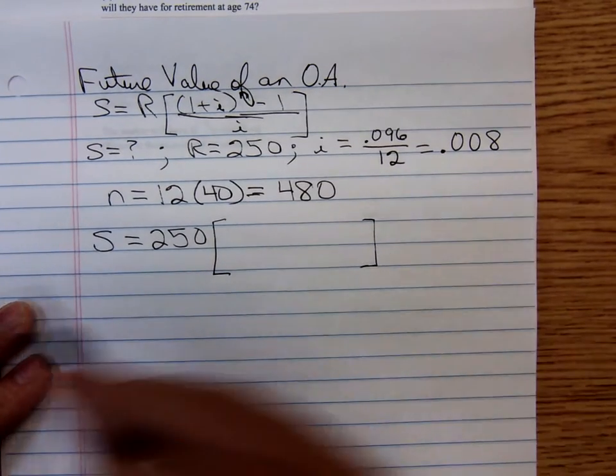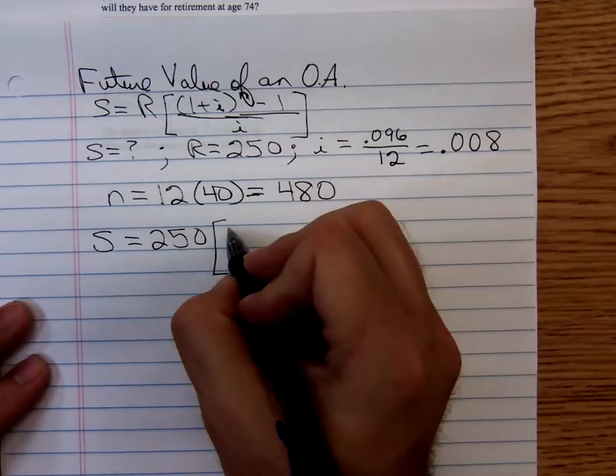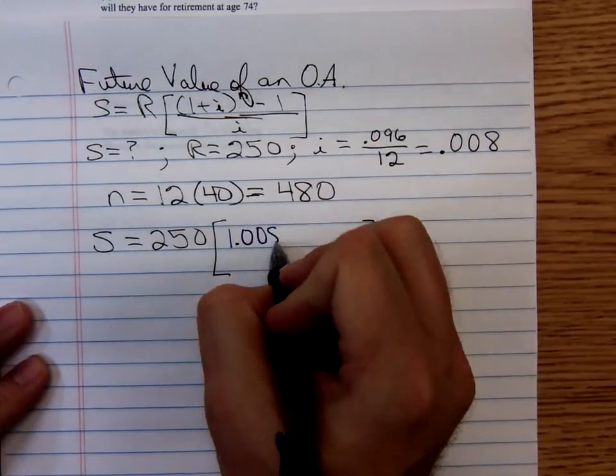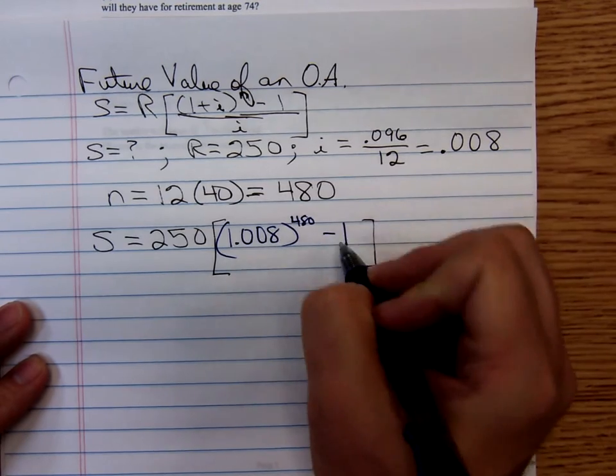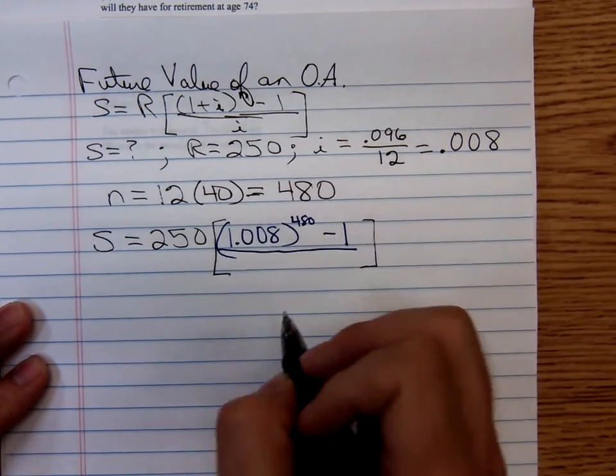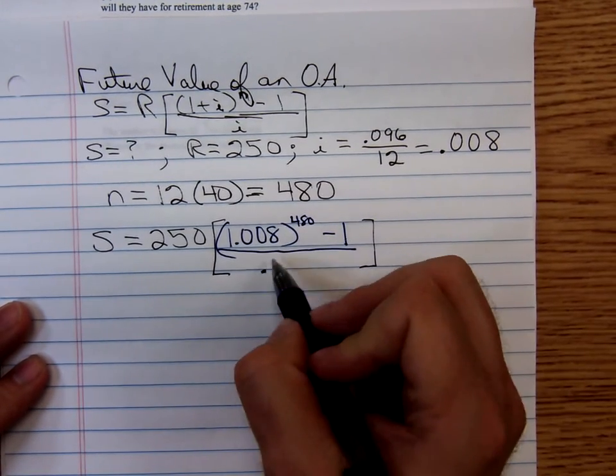1 + i, I can do that in my head. That's 1.008 to the 480 minus 1, all divided by the i value again, 0.008.